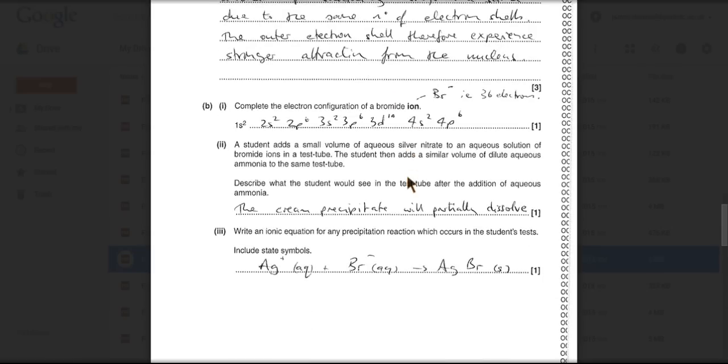Bromide ion, Br minus, is the bromide ion. So instead of having 35 electrons which the atom has, it has 36. And so you just roll out your electronic configuration for 36 electrons. So there it is there.